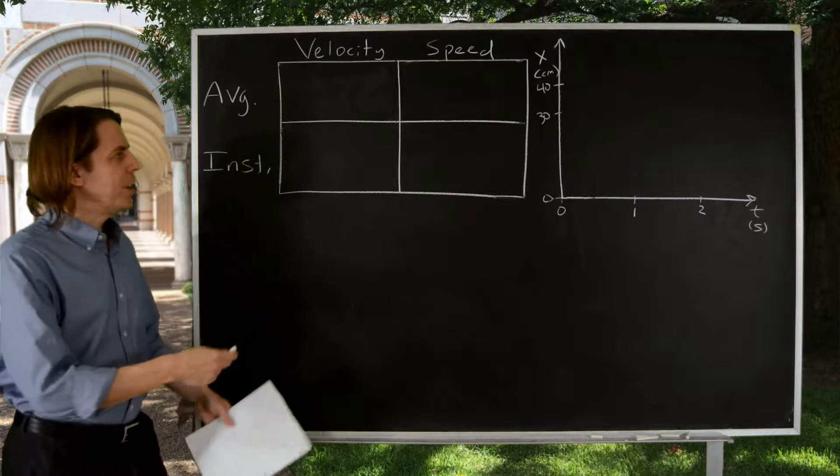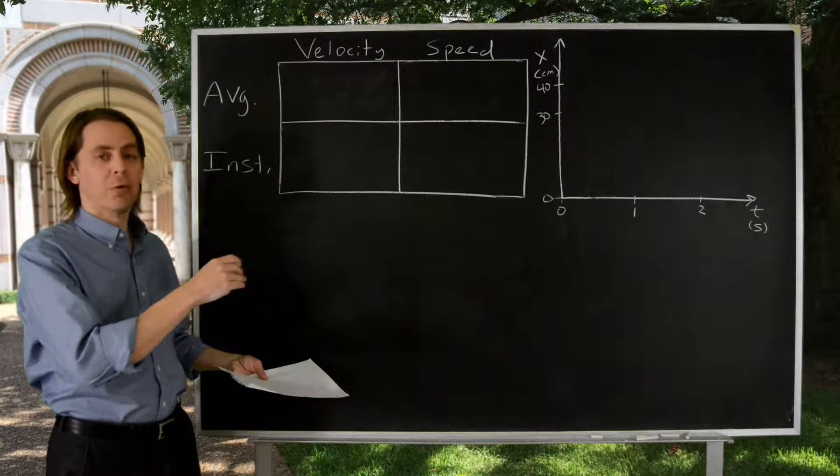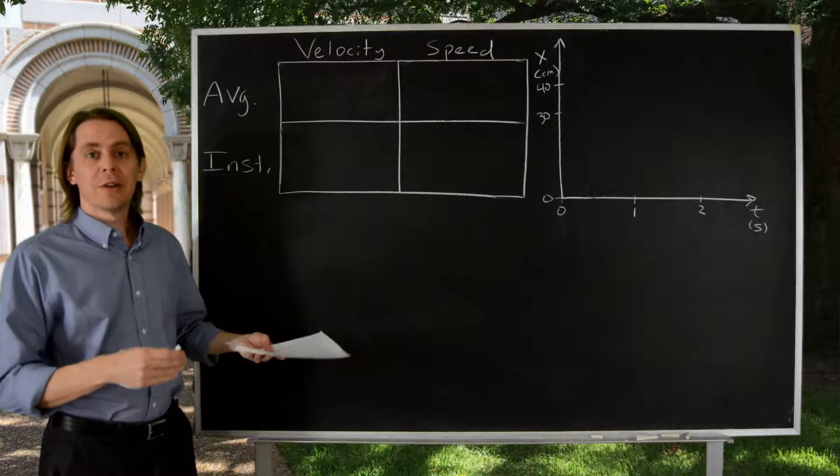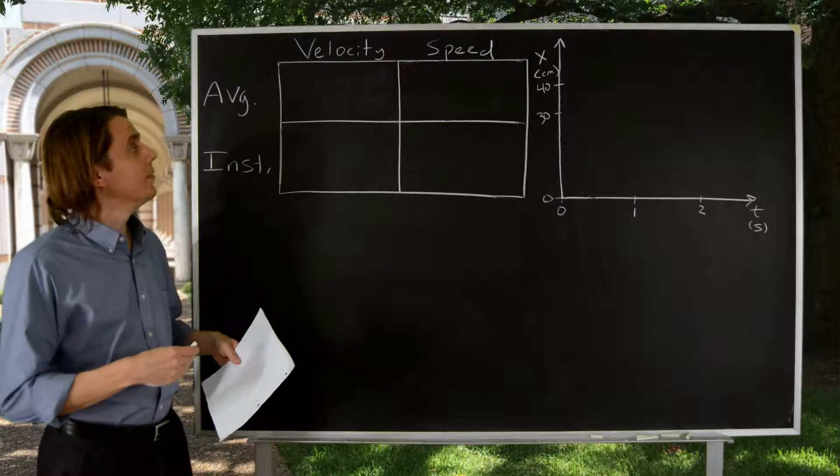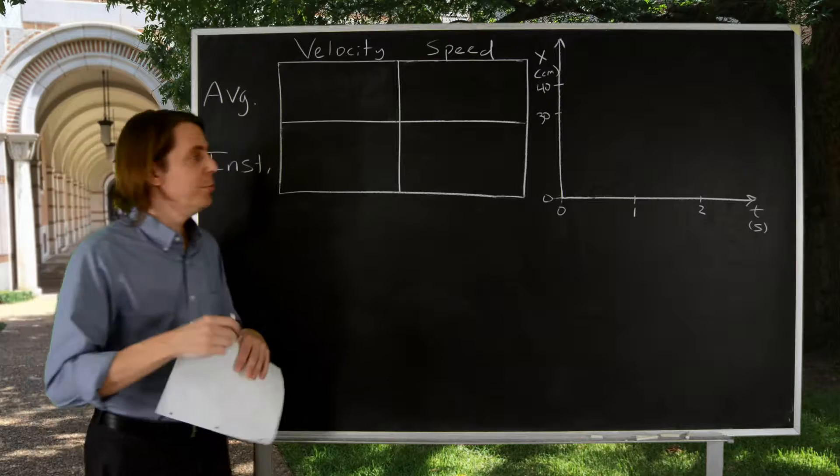You know about velocity and speed from your everyday life. It's how fast something moves, how far it goes over how long it takes. In physics, though, we have four technical definitions for velocity and speed. So we're going to go over those four, and our example will be moving chalk.